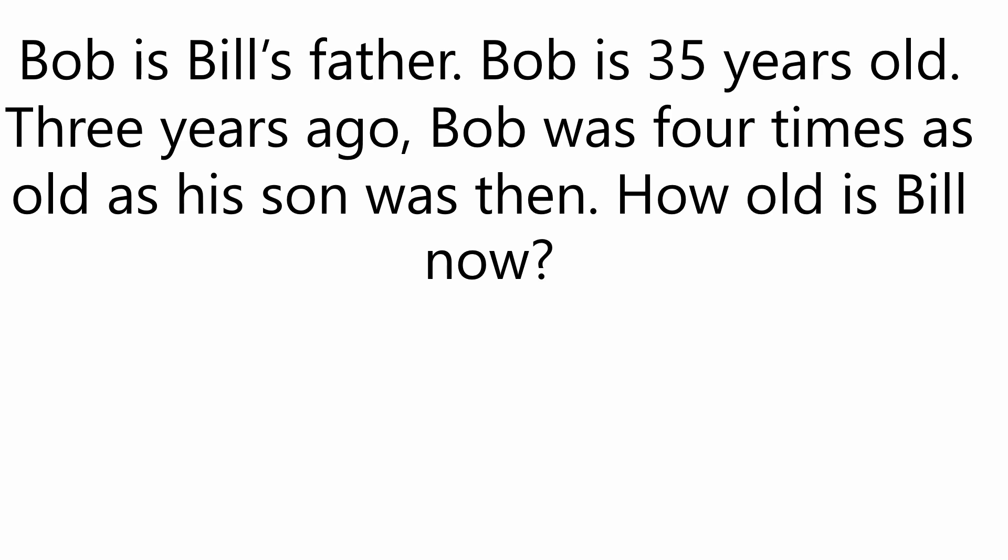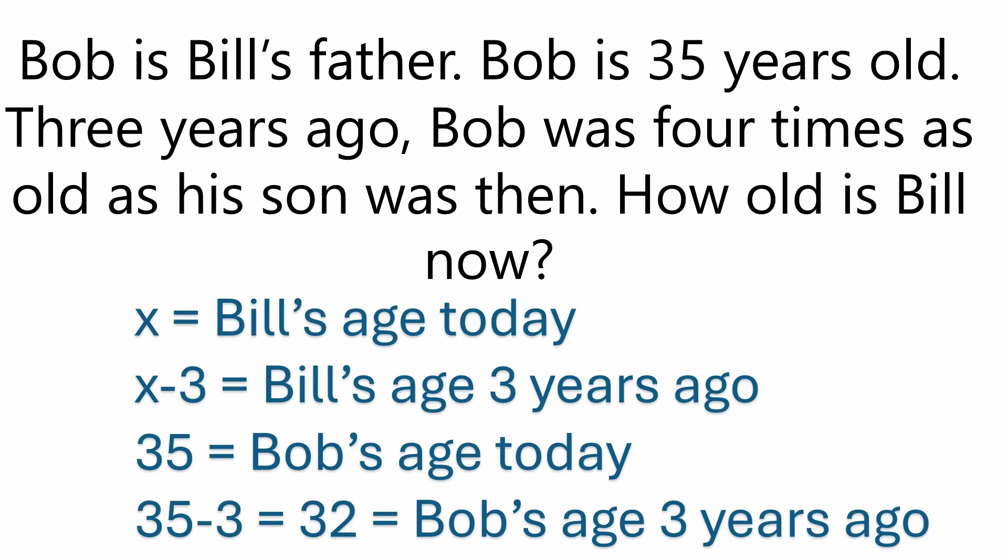We had a video a few days ago that went through a methodology for working out problems like this, and we're basically going to follow that same method. What we want to do is come up with an age. I'd like to set a variable equal to the younger person's age today, so we set x equal to Bill's age today. Three years ago, Bill — that's the son — would have been x minus three years of age.